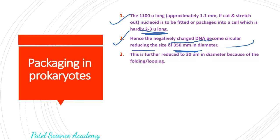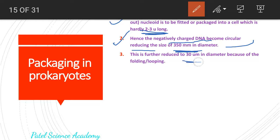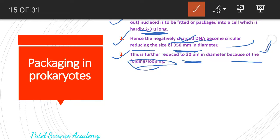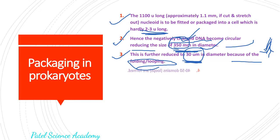This is further reduced to 30 micrometers in diameter. This 350 mm now reduces to 30 micrometers in diameter because of folding and looping. It gets folded and looped repeatedly, and because of that folding and looping, the size reduces from 350 mm to 30 micrometers.